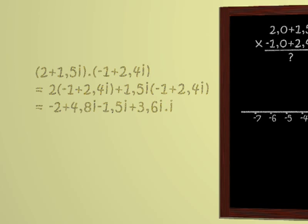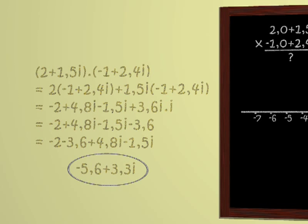Which is minus 2 plus 4.8i minus 1.5i plus 3.6i times i. But i squared is minus 1 since we invented i for this purpose. So we get minus 2 plus 4.8i minus 1.5i minus 3.6. And tidying up, that gives us minus 2 minus 3.6 plus 4.8i minus 2.5i. Giving us in all, minus 5.6 plus 3.3i.